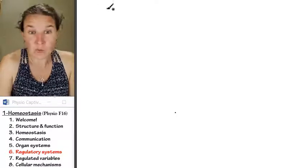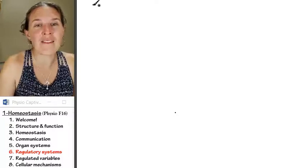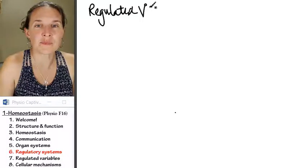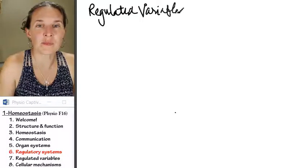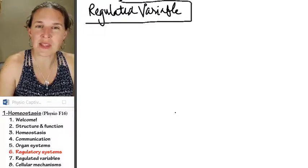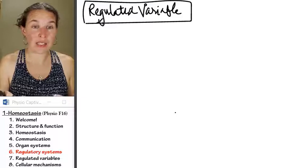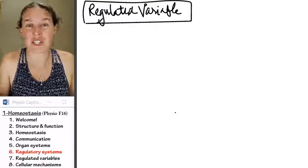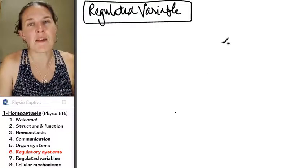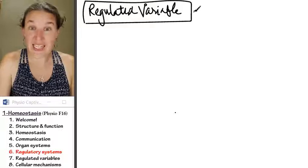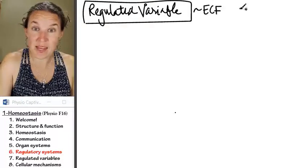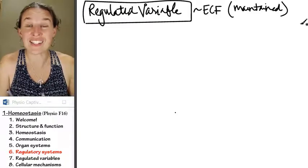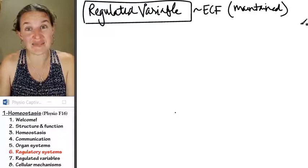So first of all, all homeostatic systems have a regulated variable, and that just means there is something like pH, like blood pressure, like ion concentration, blood glucose concentration. There's some variable that is related to the extracellular fluid that's maintained in a relatively constant state.